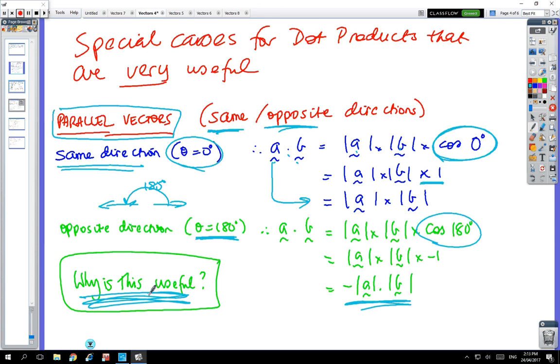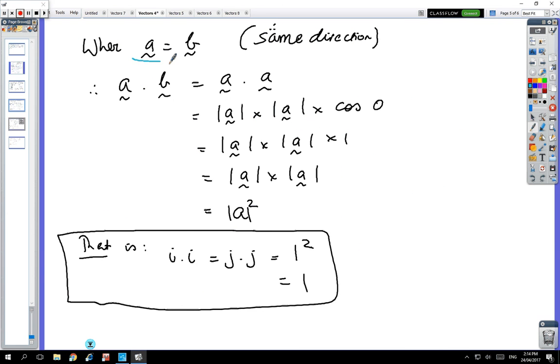Why is this useful? If we've got two vectors equal to each other, so they're going in the same direction, then a dot b, that b is going to be another a. By the definition we've got a dot a times cos θ, which is magnitude of a times magnitude of a times 1, which is the magnitude of a squared. What this means is if you've got i times i or j times j, that just equals 1 because these guys are unit vectors. That's the most important thing, so just remember that one.